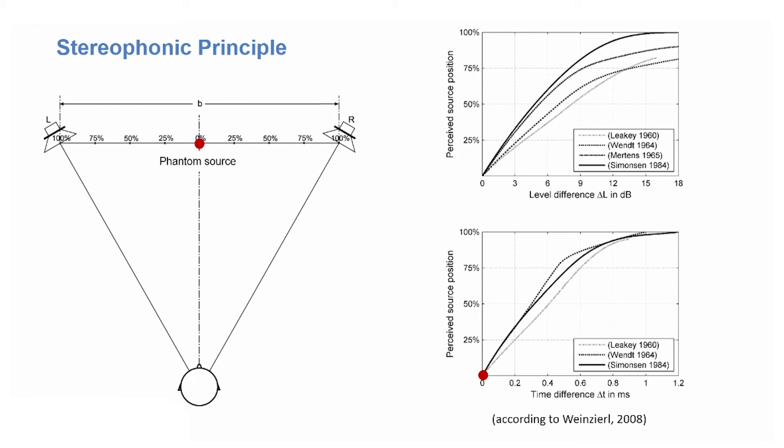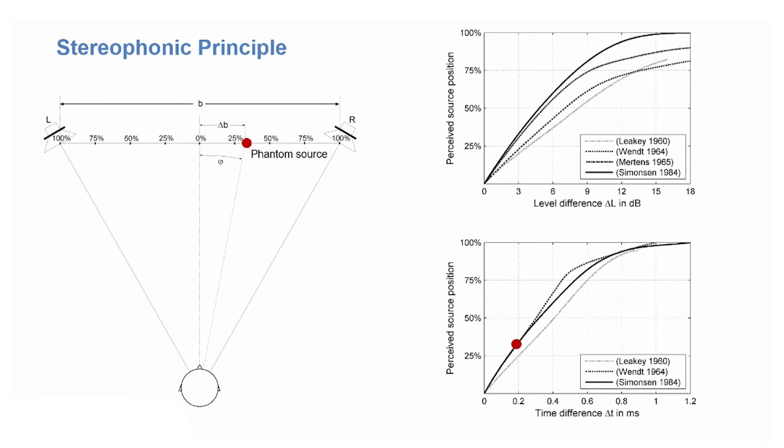If there is no time and level difference, it appears in the center. And if the level difference, for example, is 0.2 ms, it appears at about 30% of the distance to the loudspeaker ahead in time.